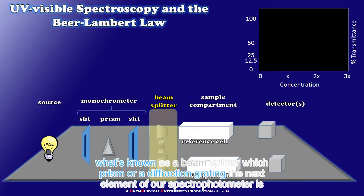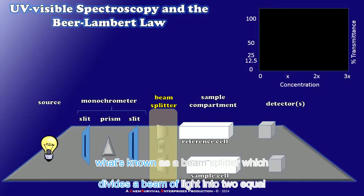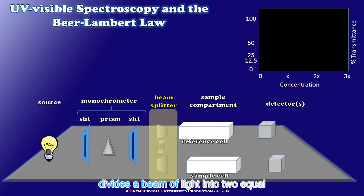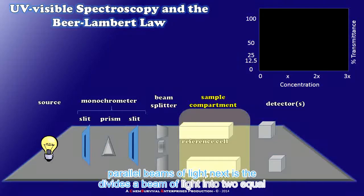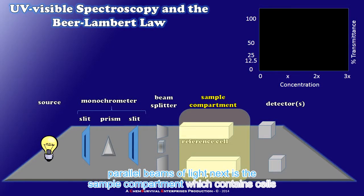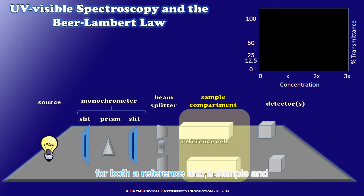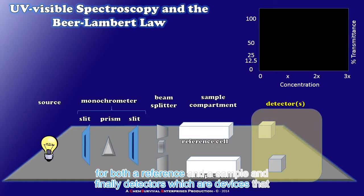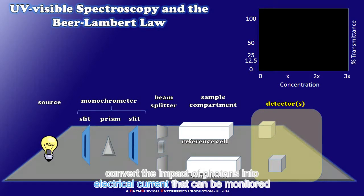The next element of our spectrophotometer is what's known as a beam splitter which divides a beam of light into two equal parallel beams of light. Next is the sample compartment which contains cells for both a reference and a sample. And finally detectors which are devices that convert the impact of photons into electrical current that can be monitored by a computer.